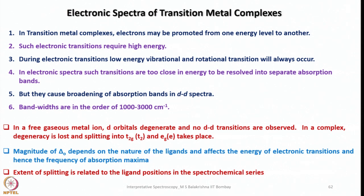In electronic spectra, such transitions are too close in energy to be resolved into separate absorption bands. The energy required for vibrational excitation is very minimal compared to electronic transitions. They cause broadening of the absorption band in d-d spectra, and as a result, the band width observed in d-d spectra is in the range of 1000 to 3000 cm⁻¹. In a free gaseous metal ion, the orbitals are degenerate and hence no d-d transitions are observed.